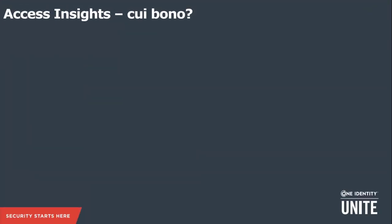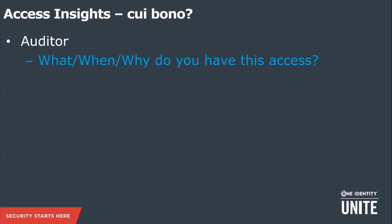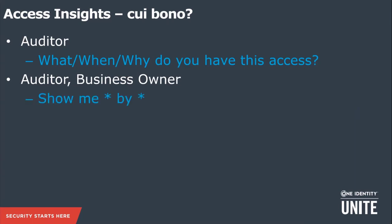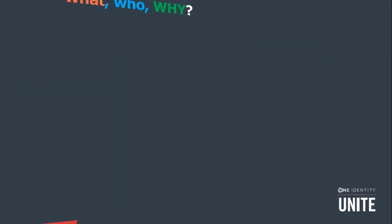Moving on to access insights. Who benefits? Auditors will be interested in the what, when, and why of access. Business owners of roles, permissions, and organizations are also interested. The key question is: show me roles by department, risk by request, requests by approver, requests by location. There are many ways to cut the data, and Identity Manager makes it very easy as standard to get that data out of the product.